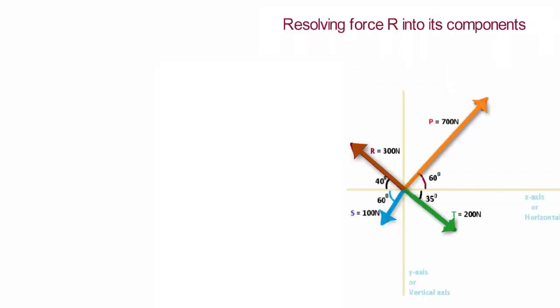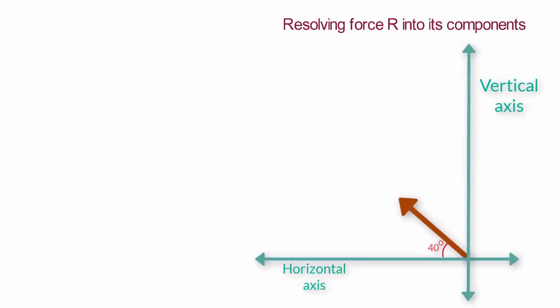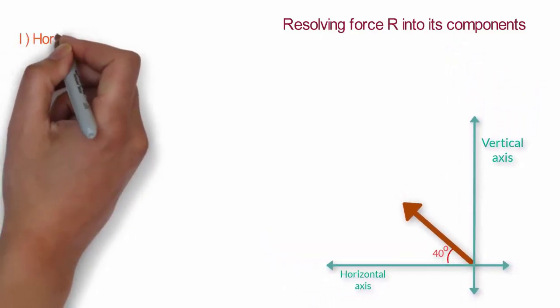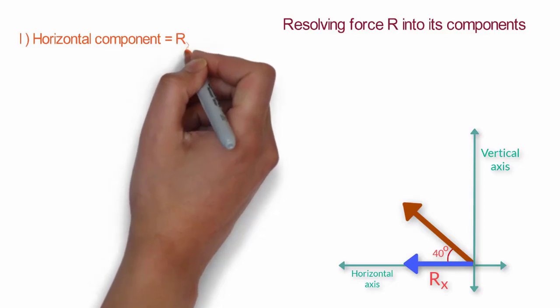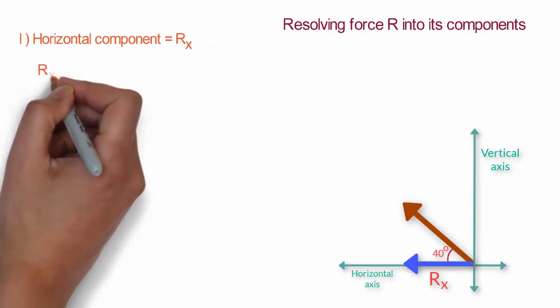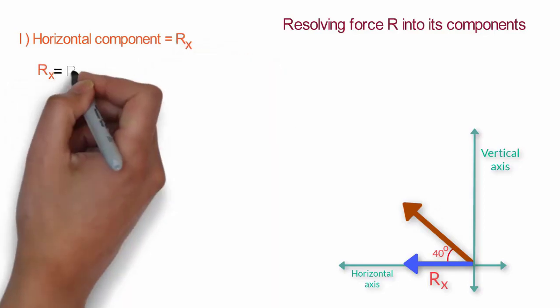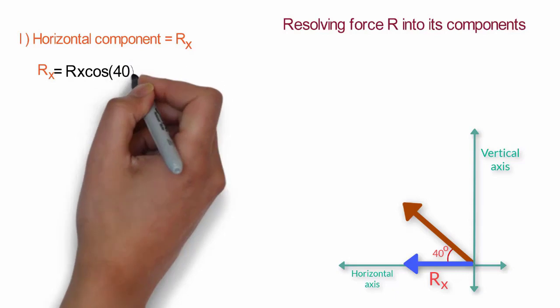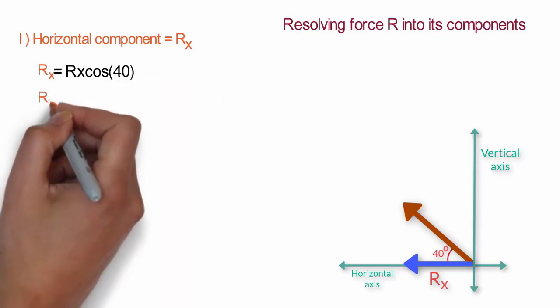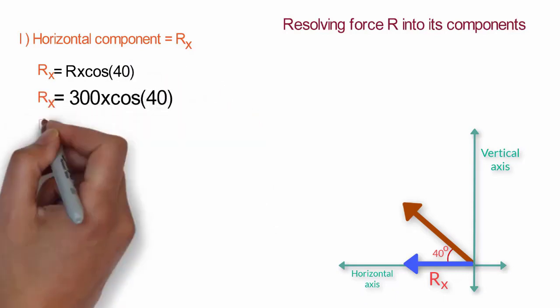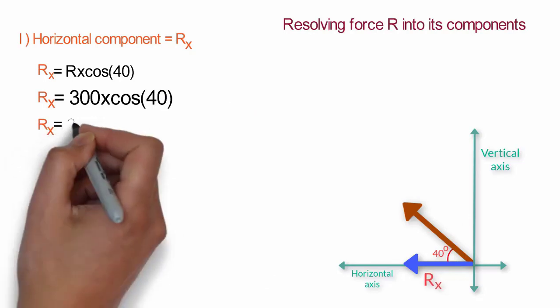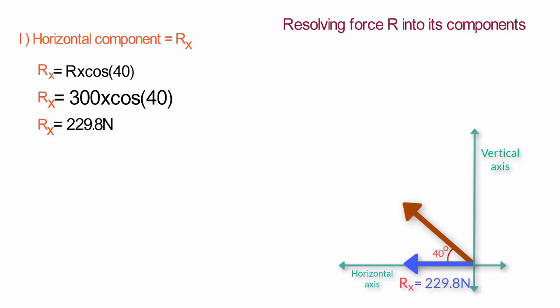For force R, which is 300 Newton making an angle of 40 degrees with the horizontal axis — to find the horizontal component Rx: Rx = R × cos 40°. After putting the values and solving, Rx equals 229.8 Newton.